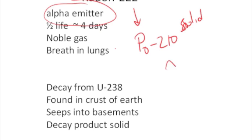Polonium is an alpha emitter as well, and it has a half-life of about 140 days.